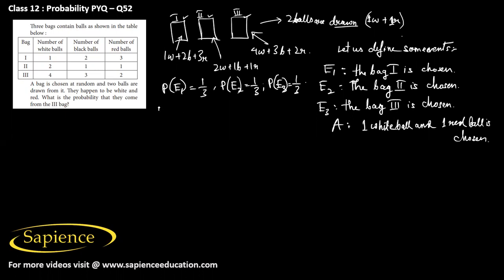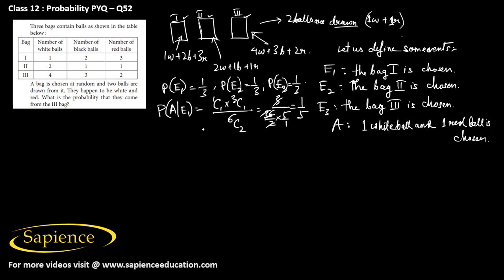P(A|E1) is the probability of choosing one white ball and one red ball from bag one. There is one white ball, so that is 1C1 ways; and three red balls so that is 3C1 ways. From all six balls we can choose any two by 6C2 ways. This gives 1×3 divided by 15, which simplifies to 1/5.